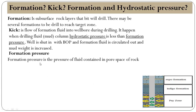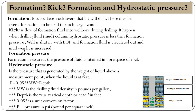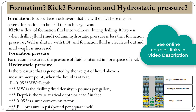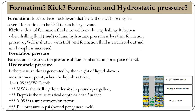Formation pressure is the pressure of the fluid contained in the pore space of the rocks. Hydrostatic pressure is the pressure generated by the weight of the liquid above a measurement point when the liquid is at rest. It can be calculated as: P = 0.052 × MW × Depth, where MW is the drilling fluid density in pounds per gallon, depth is true vertical depth in feet, 0.052 is the unit conversion factor, and P is pressure in psi.